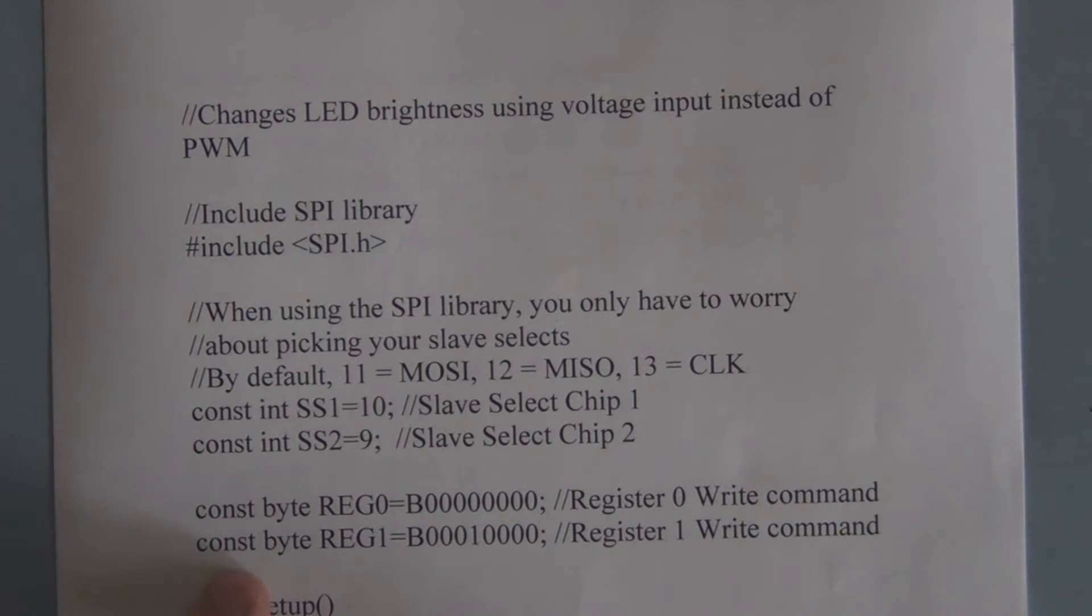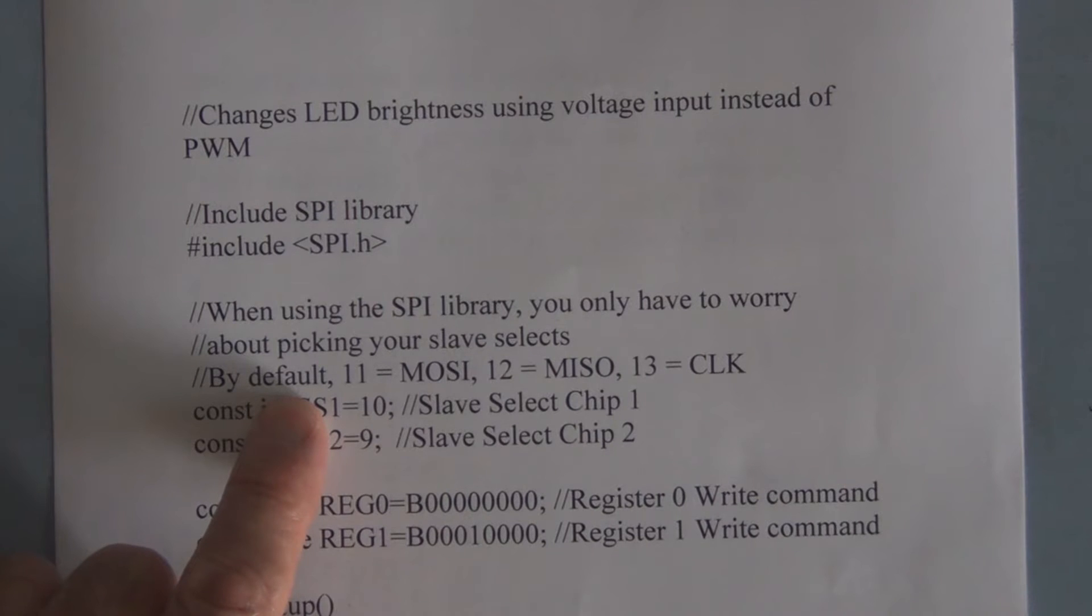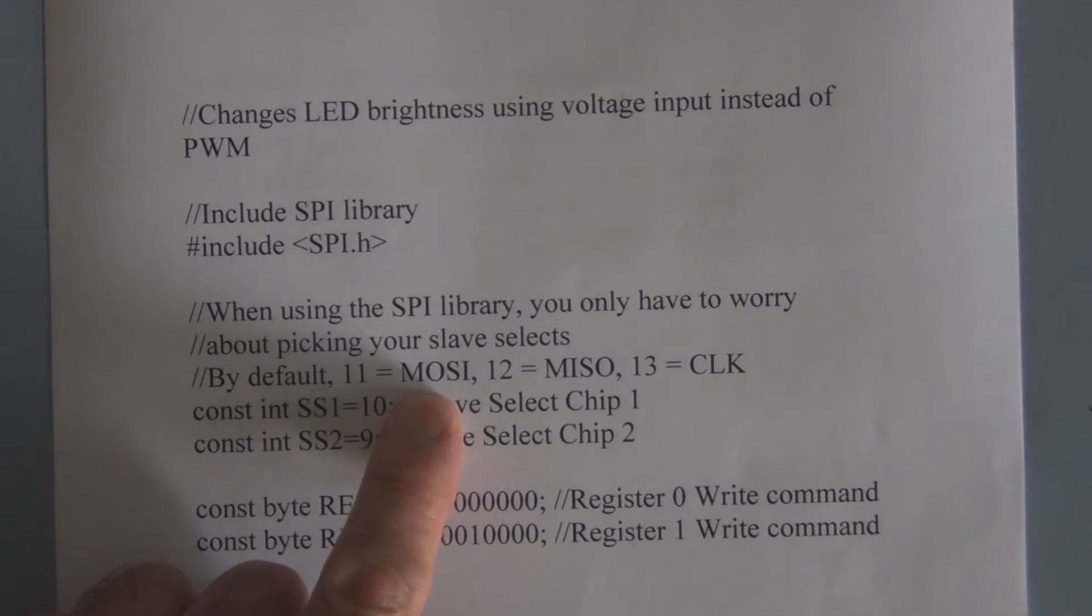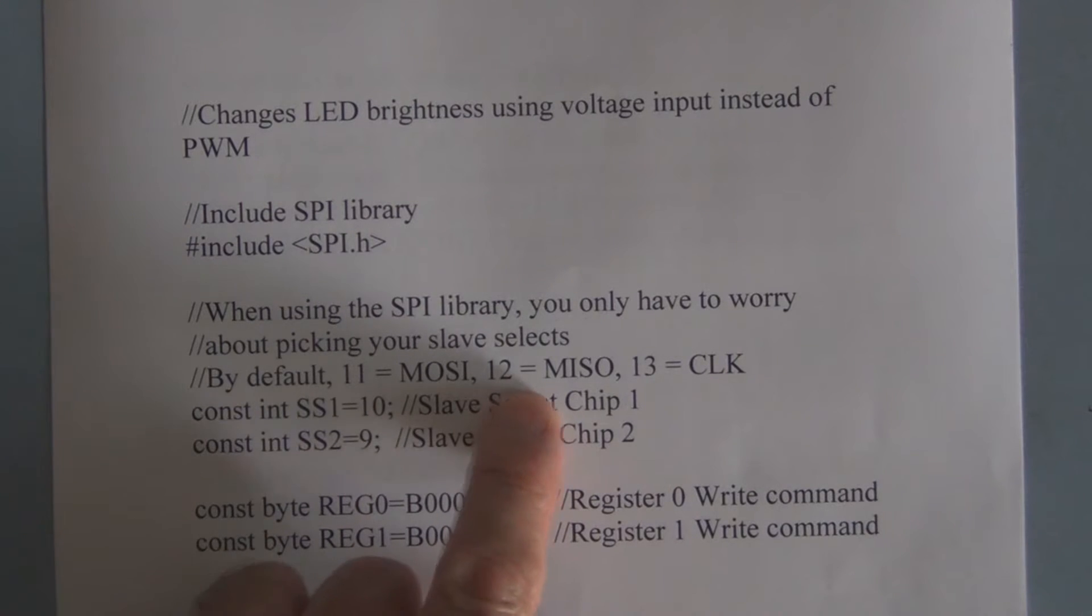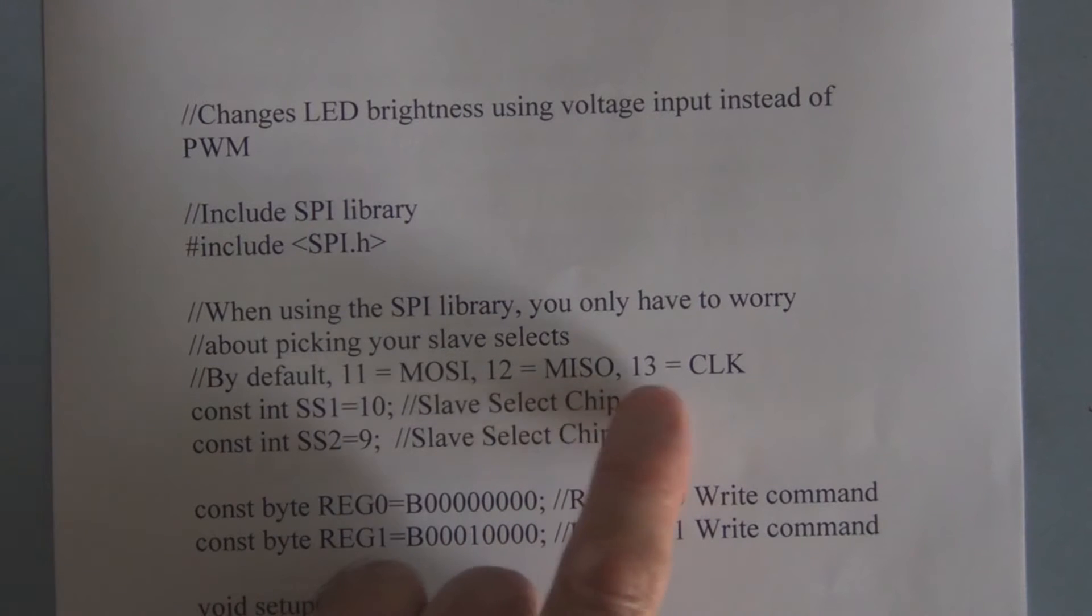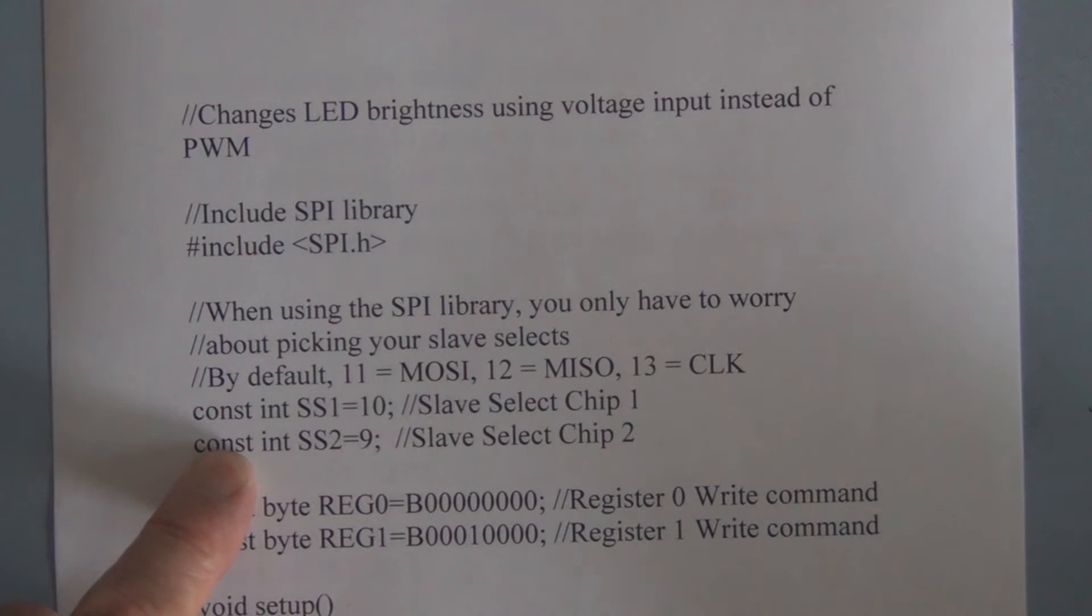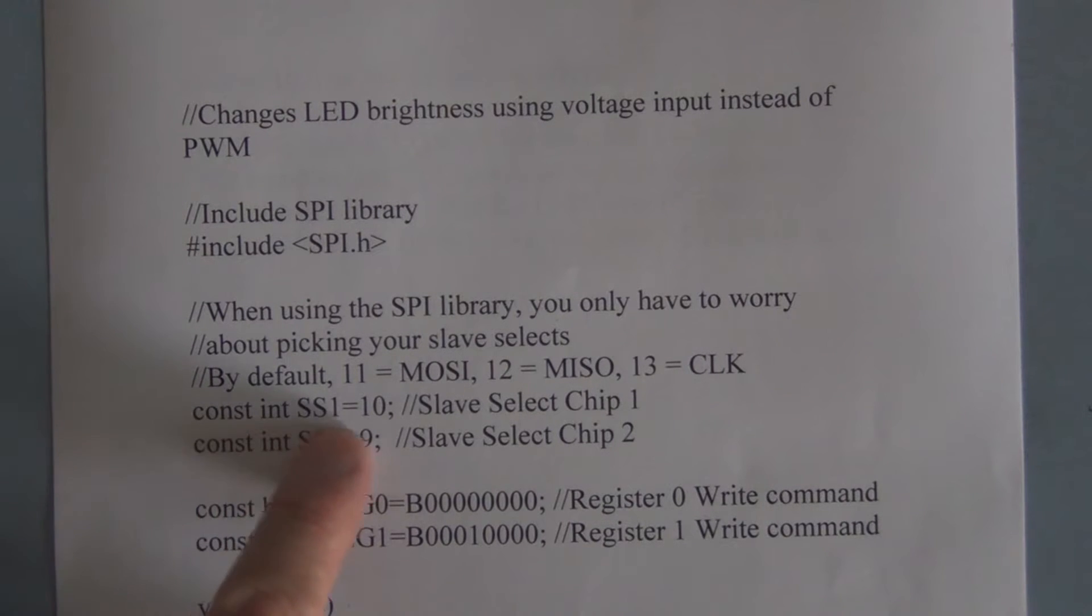With the UNO there is a default where you use pin 11 for the MOSI or the serial data in, pin 12 for the MISO or serial data out, and pin 13 is used for the clock, the serial clock. Here we're setting up the pins for the slave or chip select, so SS1 is pin 10 and SS2 will be pin 9.